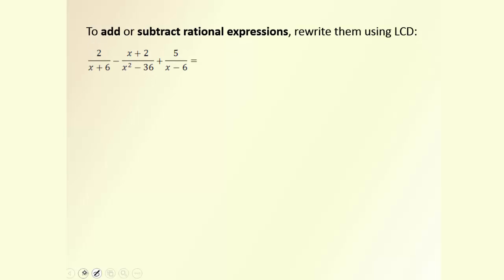It is a little more difficult to add or subtract rational expressions. The rule is to first look at all your denominators, because you need to create a common denominator — specifically, the least common denominator. In order to do that, let's factor all denominators.